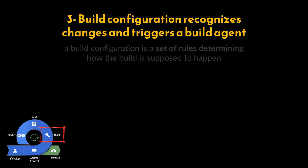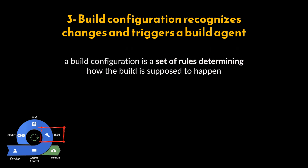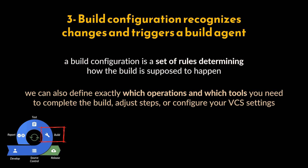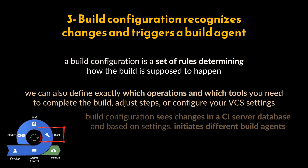Step three: build configuration recognizes changes and triggers a build agent. A build configuration is a set of rules determining how the build is supposed to happen — for instance, it sets the timing: once a new code commit arrives, at 5 PM every day, or after some external process like a security scan is finished. Here you can also define which operations and tools are needed, adjust steps, or configure your VCS settings.